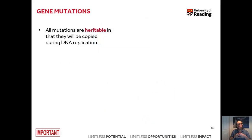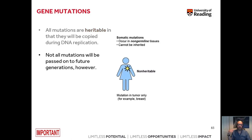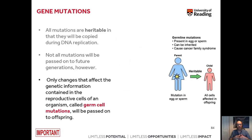In principle, all mutations are heritable in the sense that they will be copied during DNA replication. However, only mutations that occur in sex cells will be passed on to future generations. Only changes that affect the genetic information contained in the sex cells or reproductive cells will be passed on to the offspring.